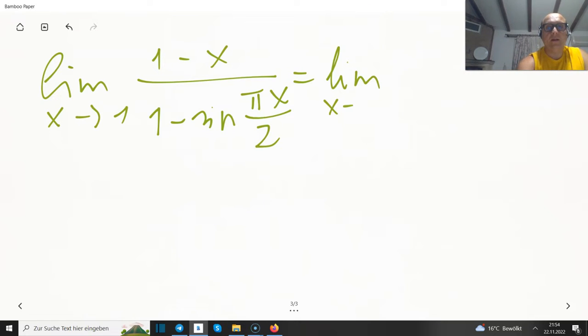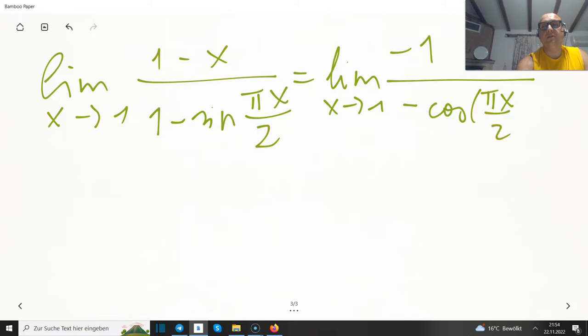Let's use L'Hôpital. We have only minus 1 in the numerator. What's happening in the denominator? So sine gives me a cosine, so minus cosine of πx divided by 2, times the inner derivative, would be π divided by 2. So if x is running towards 1, we got cosine of π divided by 2, cosine of 90 degrees, which would be 0. Is that a problem? Well, let's see.